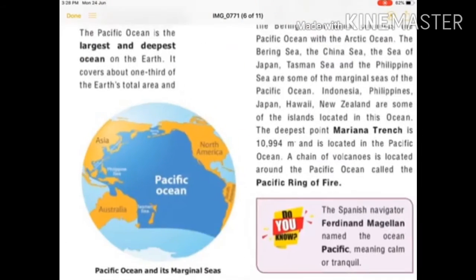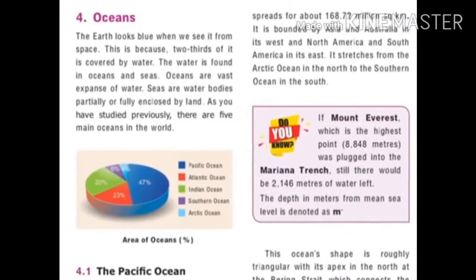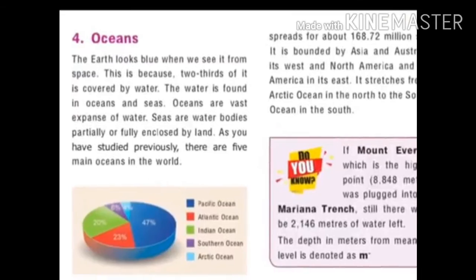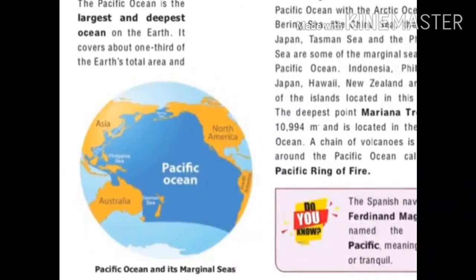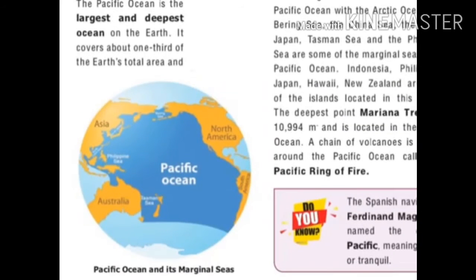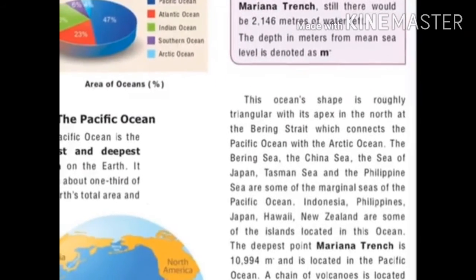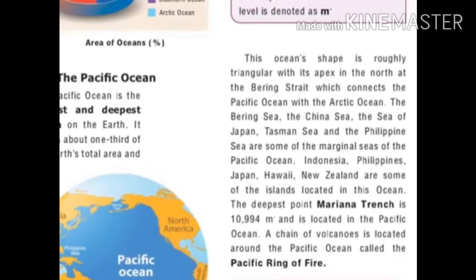The Pacific Ocean spreads for about 168.72 million square kilometers. It is bounded by Asia and Australia in the west and North America and South America in the east. It stretches from the Arctic Ocean in the north to the Southern Ocean in the south.